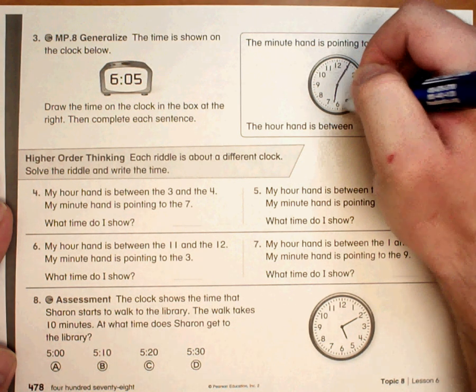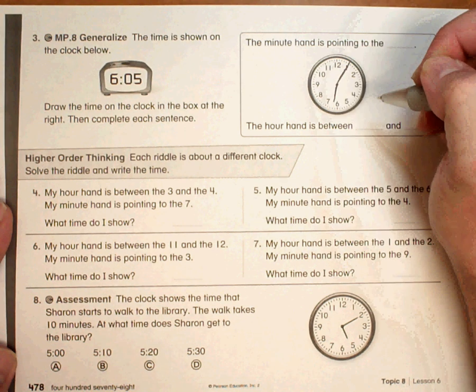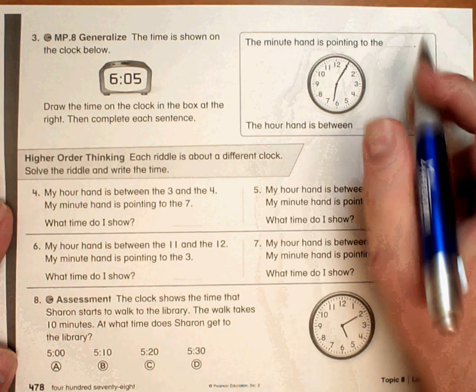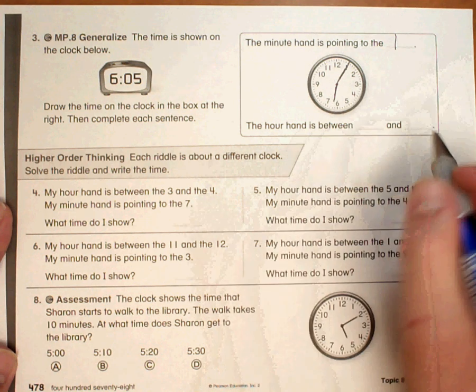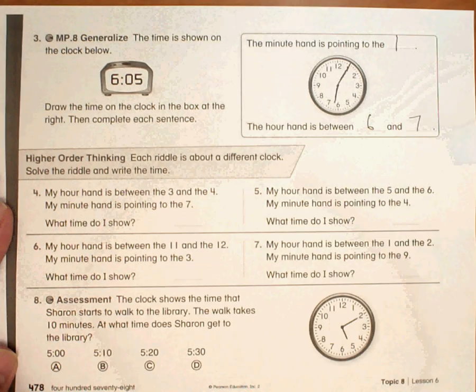And the hour hand doesn't quite reach the numbers. So the minute hand is pointing to the 1, and the hour hand is between the 6 and the 7.